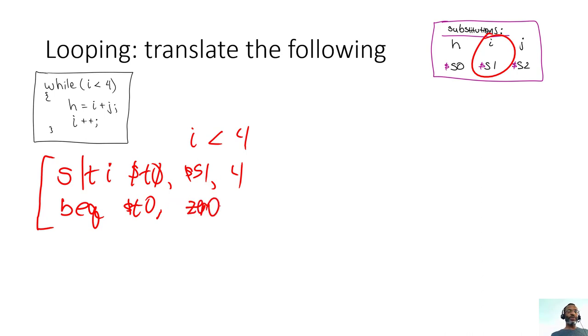If t0 is zero, then we know that we want to branch. And so I'll call this label 'exit.'